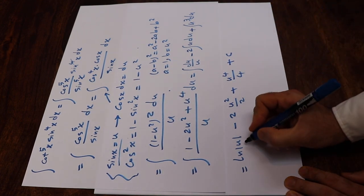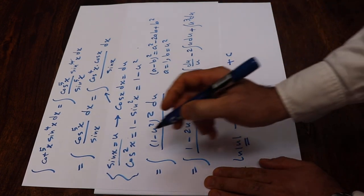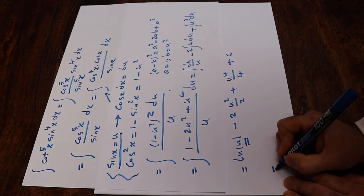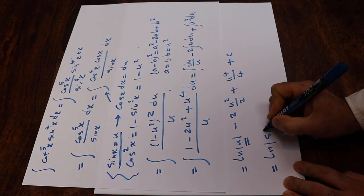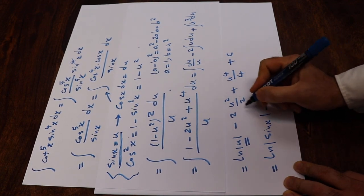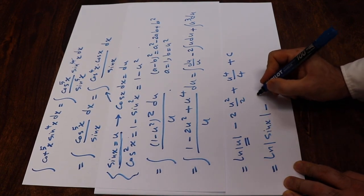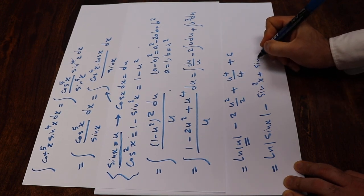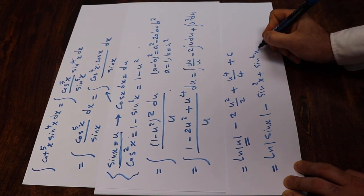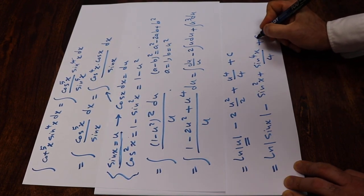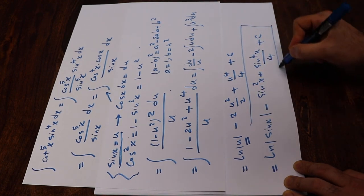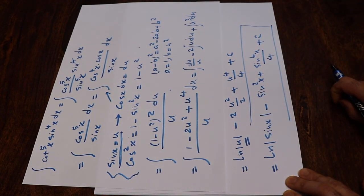All you need to do now is substitute back u with sin x. Therefore, the solution is: ln(sin x) minus 2 times sin²x divided by 2, plus sin⁴x divided by 4, plus C, the constant of integration. And that is the solution to our integral.